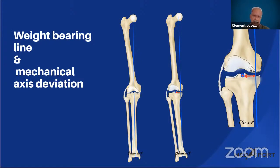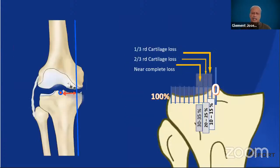Once you have the full-length X-ray, you must construct the weight-bearing line — the line connecting the center of the femoral head to the center of the ankle joint. In a normal knee, this line falls near the center of the joint, slightly more medial. In a varus knee, it falls much more medially. If it is more than 15 mm medially, it is termed a significant mechanical axis deviation.